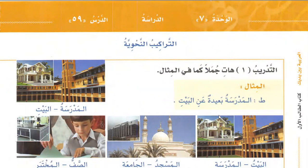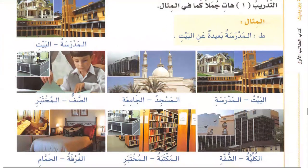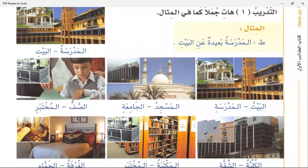Bring sentences like the one in the example. The school is far from the house. For masculine we use 'baid', for feminine we also use 'ba'ida'. For proximity we use 'min', for 'baid' we use 'an'. Al-madrasatu ba'idatun anil bayti — the school is far from the house.